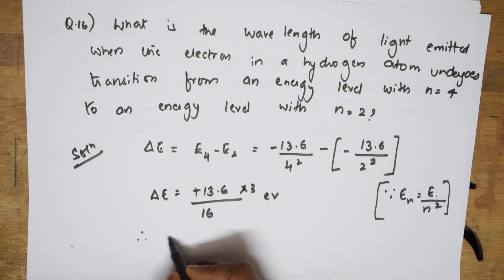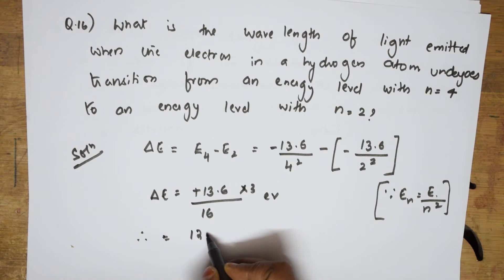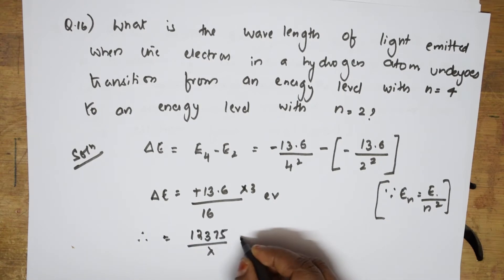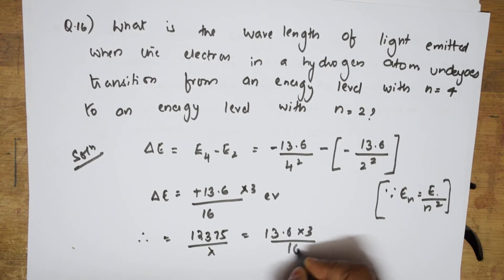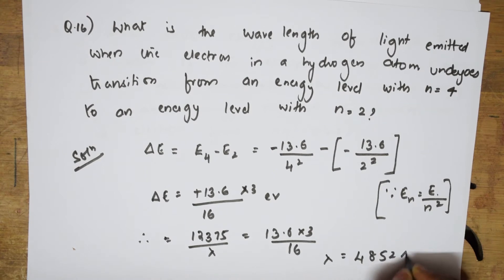So now what can I write? I can write this using the relation: 1275 divided by lambda equals 13.6 × 3 / 16. Solving for lambda, I get lambda = 4852 angstroms.